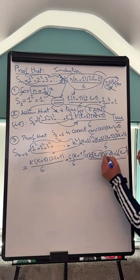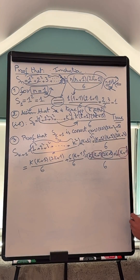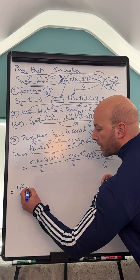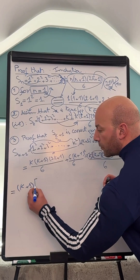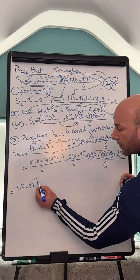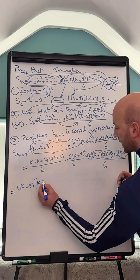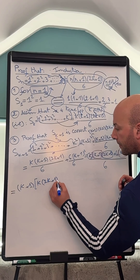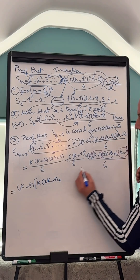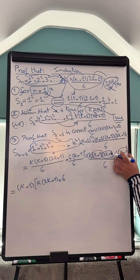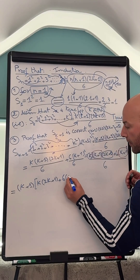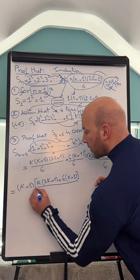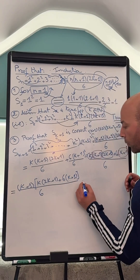From here we're going to take the common factor out, which is going to be k plus 1. What we've got left in here is k times 2k plus 1, plus 6 times k plus 1 squared. If we take k plus 1 out, we're going to have k plus 1 left, all divided by 6.